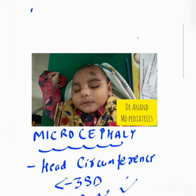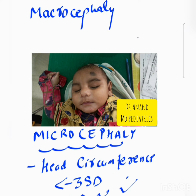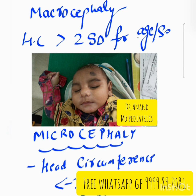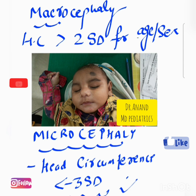And there is one more term which is known as macrocephaly. What is macrocephaly? Macrocephaly is nothing but head circumference more than 2 standard deviation for the mean of the age and sex. With the respective age and sex, if the head circumference is more than 2 standard deviation, that is macrocephaly.